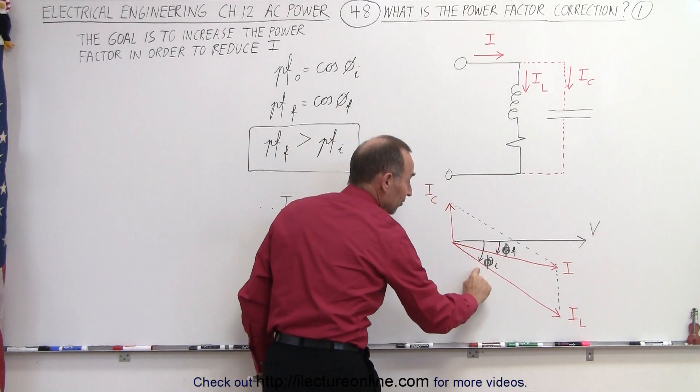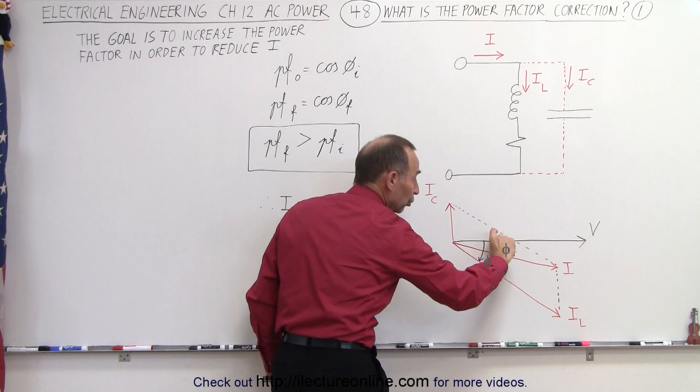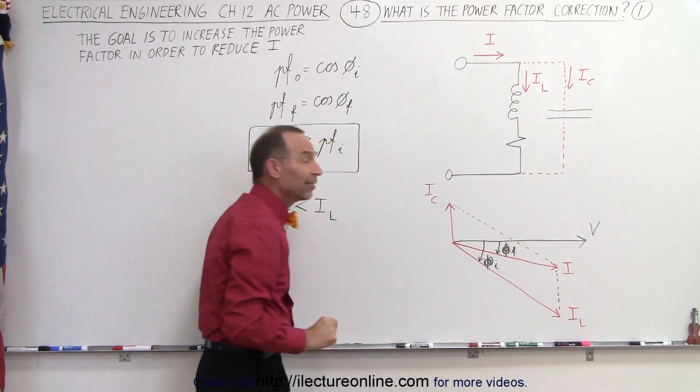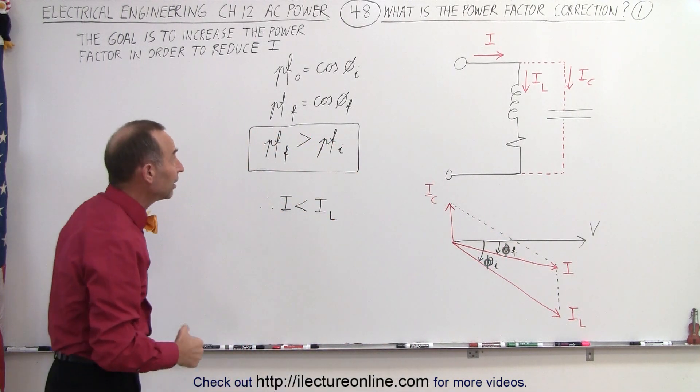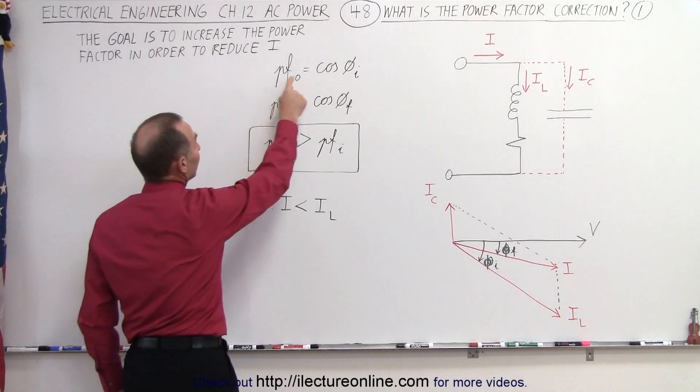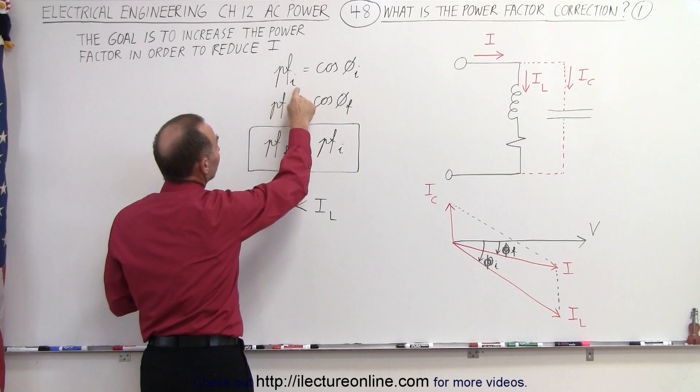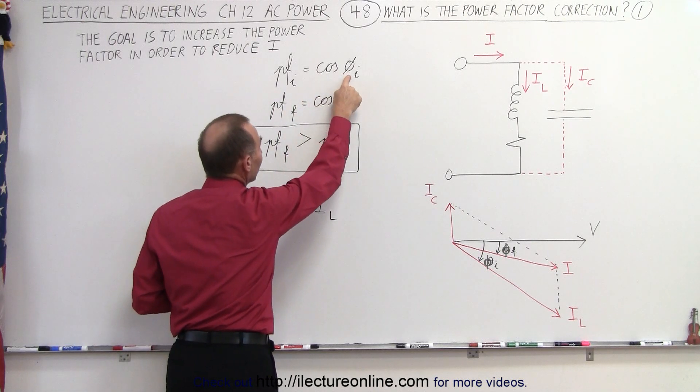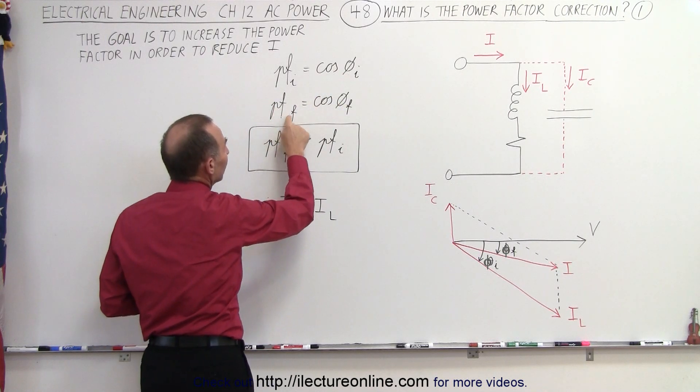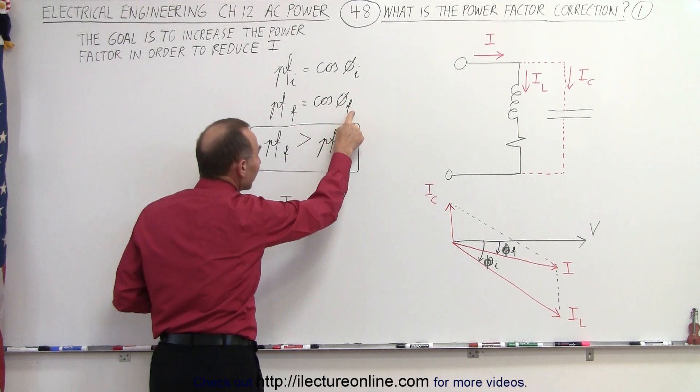Notice that the larger initial phase angle is now being reduced to a smaller final phase angle. The power factor initially was the cosine of the initial phase angle. The power factor finally is the cosine of the final phase angle.